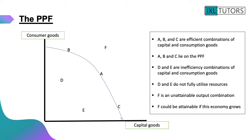Now let's look at points D and E. Points D and E are inefficient combinations of capital and consumer goods because they don't fully utilize resources. This economy can produce more consumer or more capital goods at points D and E if they shifted those onto the PPF instead. Then we've got point F — point F is an unattainable output combination. However, you may be able to attain this point if your economy grows, which we'll look at a little bit later on.